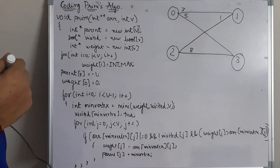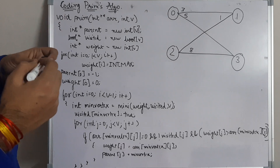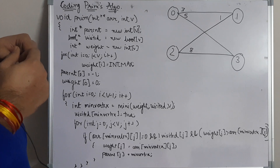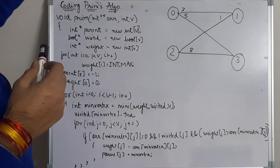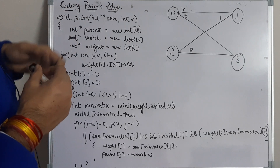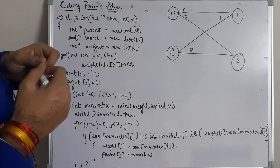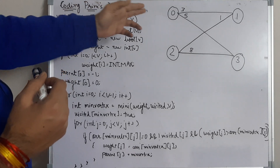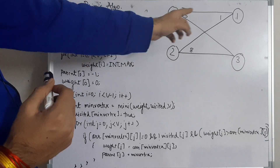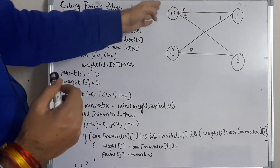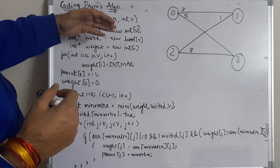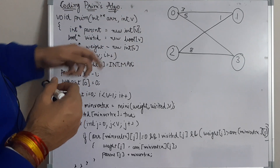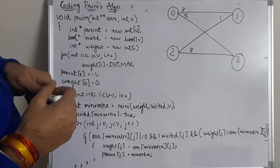Today we are coding Prim's algorithm. In the function we will pass an array containing the number of vertices in rows and columns. For each vertex we have an edge with a particular weight — for example, array[0][1] contains weight 3 because there is an edge between vertex 0 and 1. We pass the array containing weights of all edges and the number of vertices.